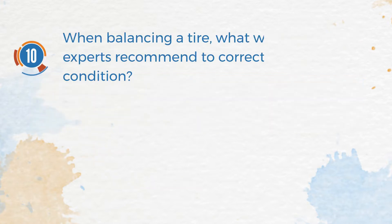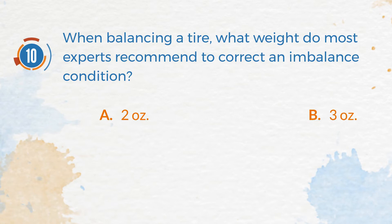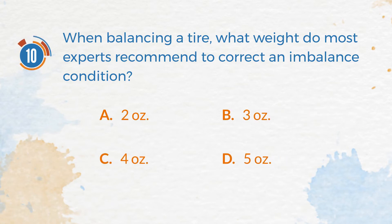Number 10. When balancing a tire, what weight do most experts recommend to correct an imbalance condition? A. Two ounces. B. Three ounces. C. Four ounces. D. Five ounces.